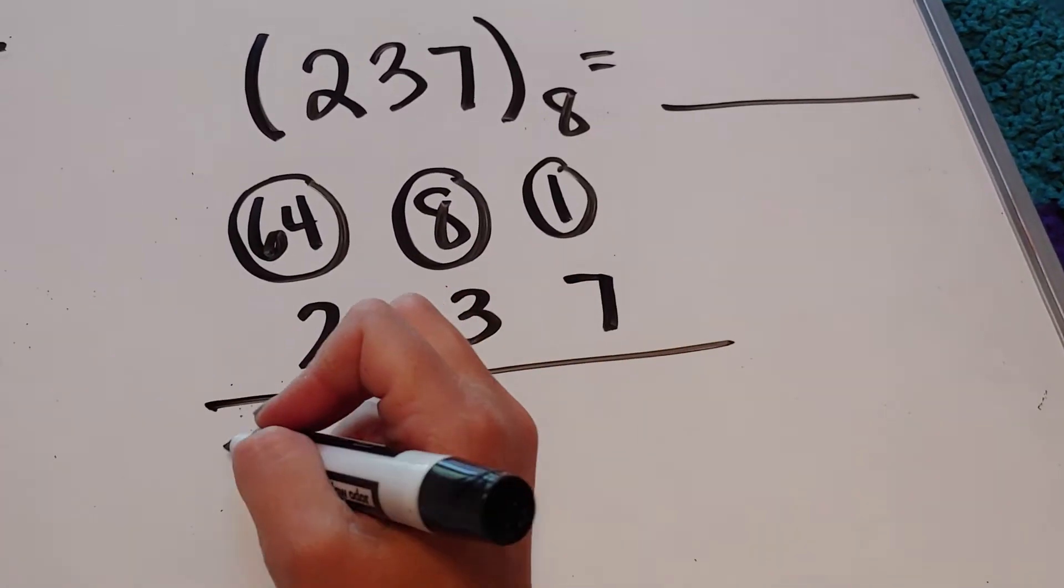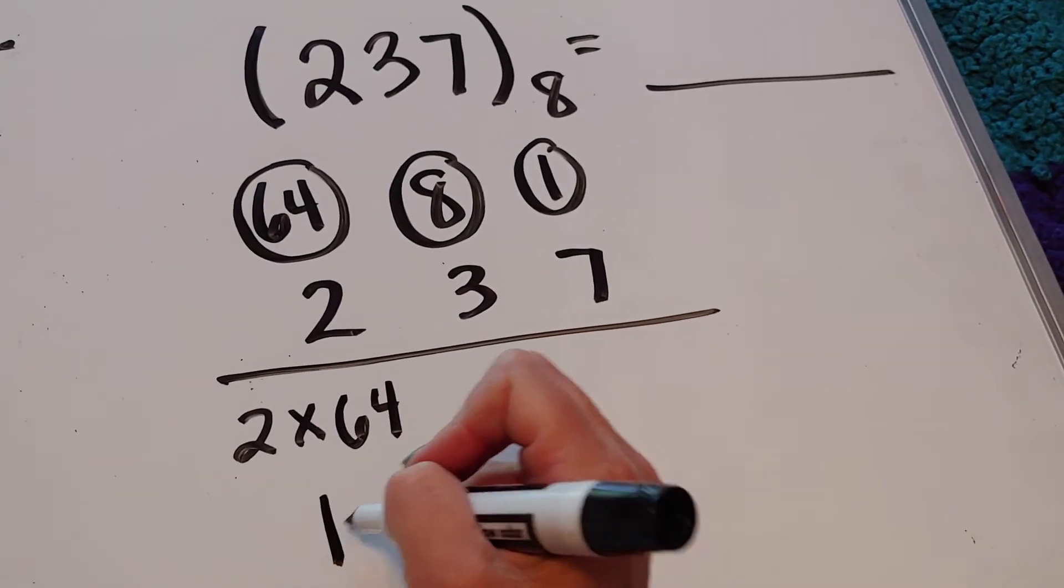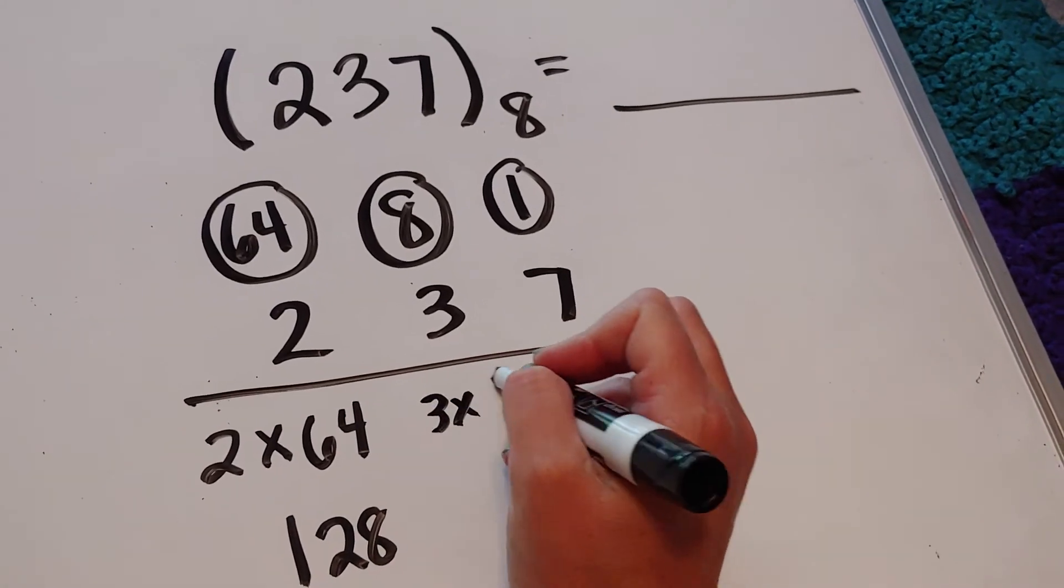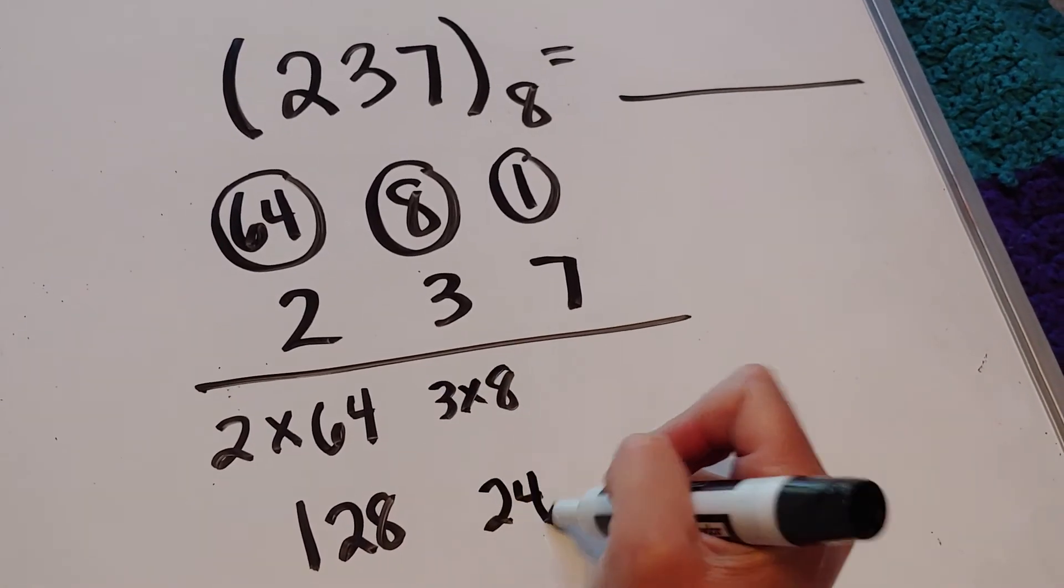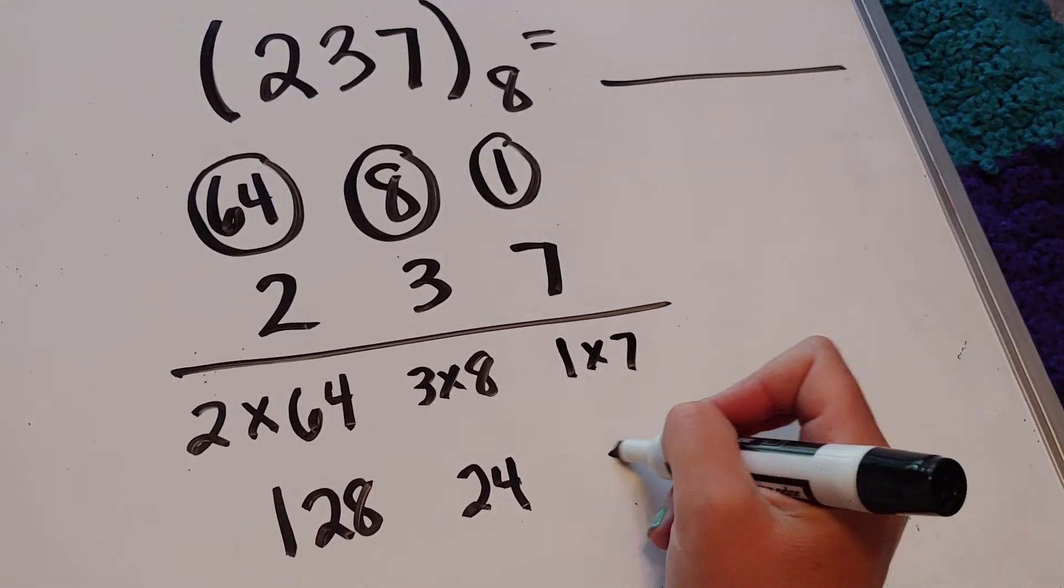Two 64-cent coins, so 2 times 64 is 128. 3 times 8, that's 24. And then I'm going to have 1 times 7, which is 7.